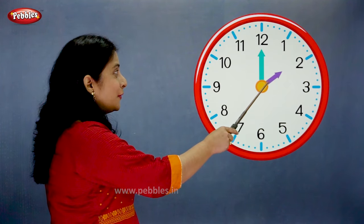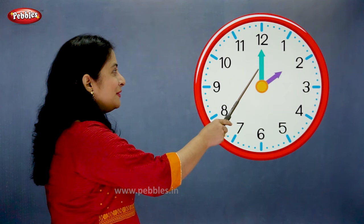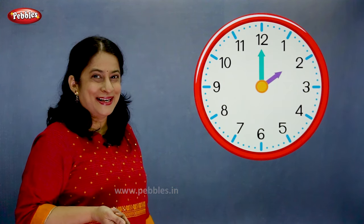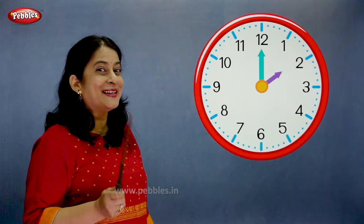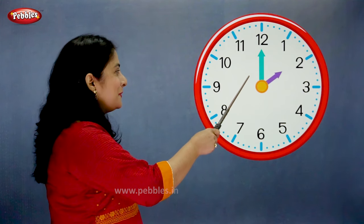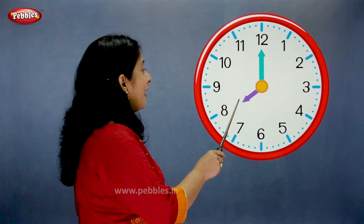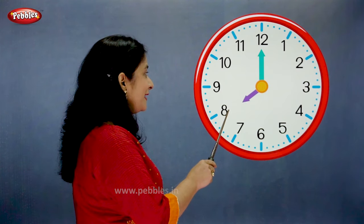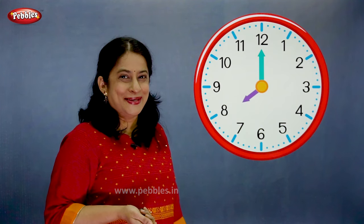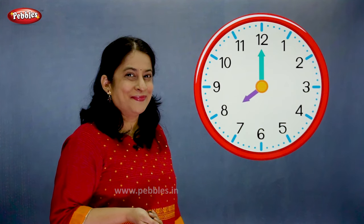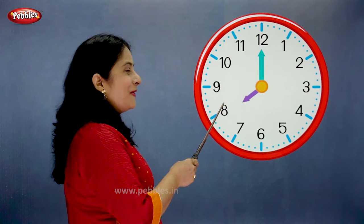The hour hand is on 2. The minute hand is on 12. So what is the time? Come on, tell me fast. Correct — 2 o'clock. The hour hand is on 8. The minute hand is on 12. So what is the time? Correct — the time is 8 o'clock.